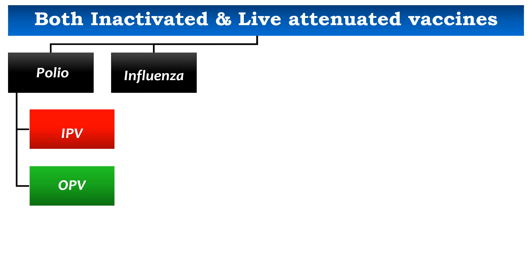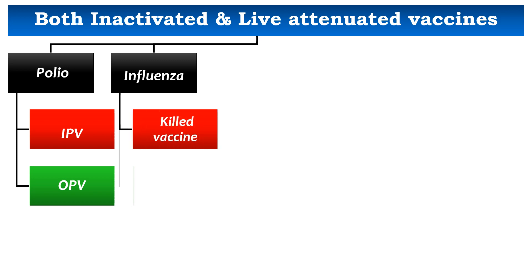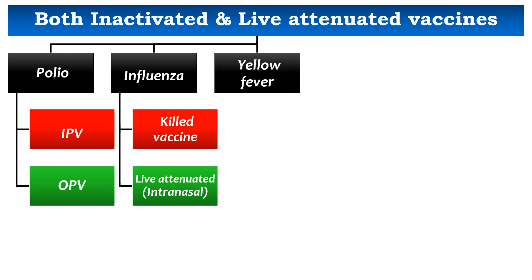For influenza, we also have both a killed vaccine and a live attenuated vaccine. The strains to be included in the vaccine depend upon the strains isolated in the previous influenza season and the strains anticipated to circulate in the upcoming season. The live attenuated vaccine is trivalent and is given intranasally.